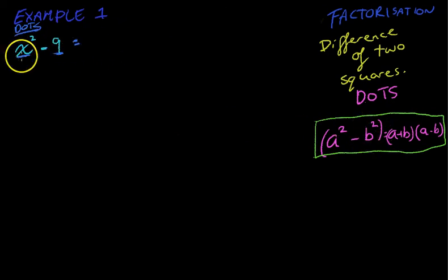is equal to A, which is just X in this case, plus B, plus B, now the square root of this number is 3. And then we do all of that again, but instead of a plus, we use a minus.